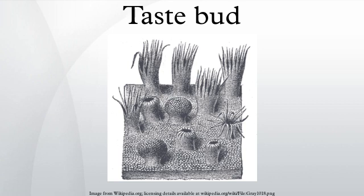Foliate papillae are ridges and grooves towards the posterior part of the tongue, found at the lateral borders. They are innervated by the facial nerve and the glossopharyngeal nerve.